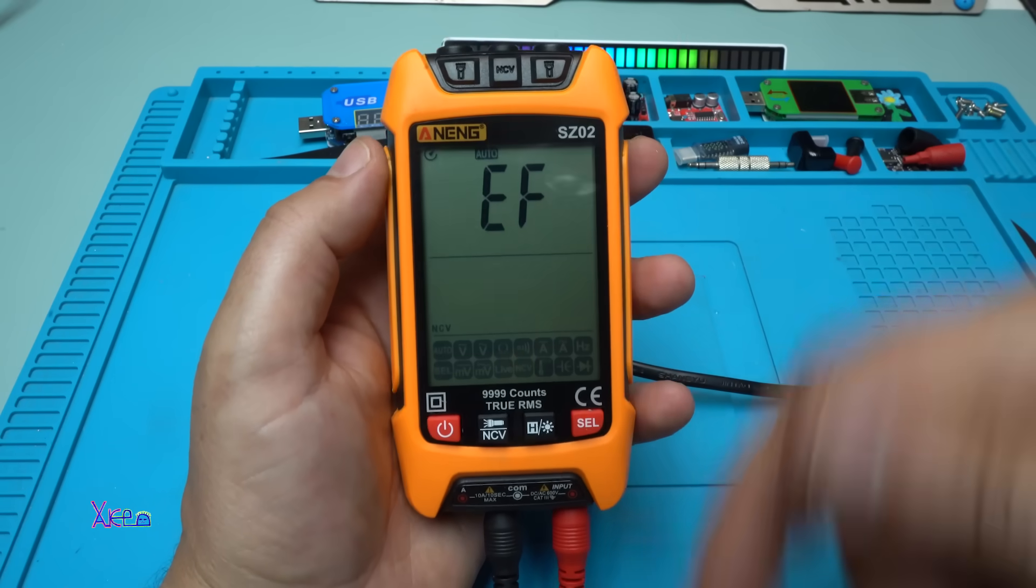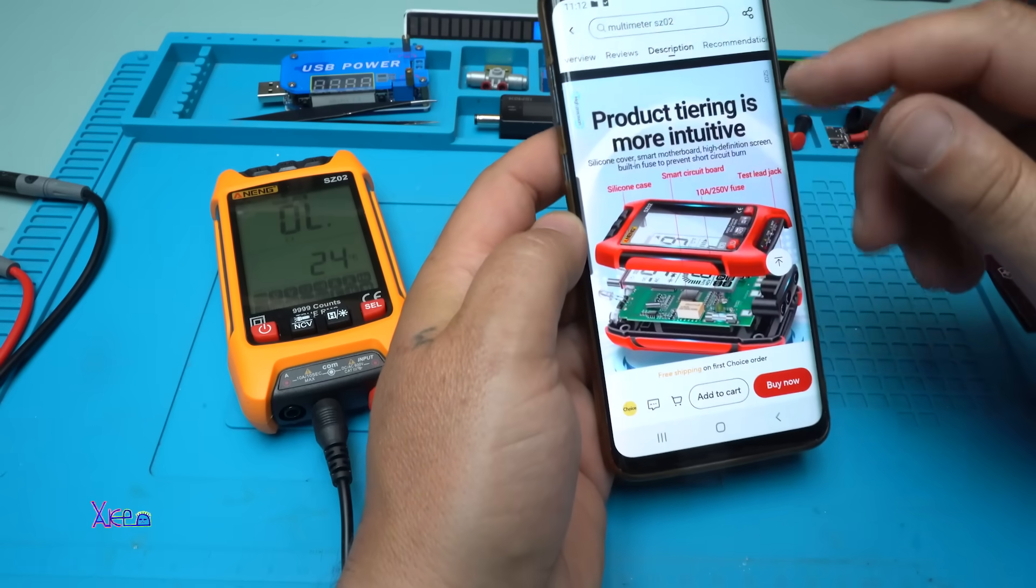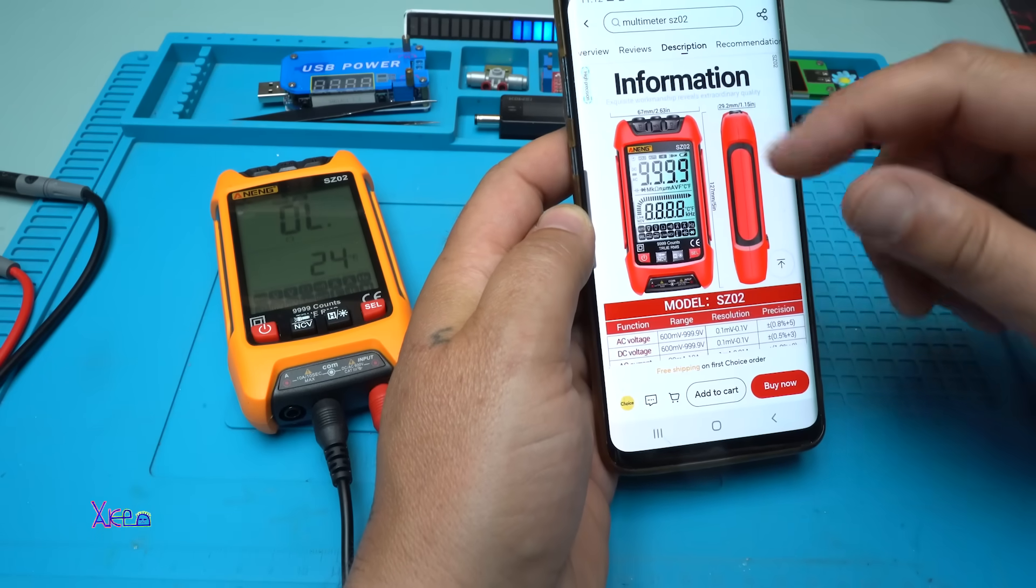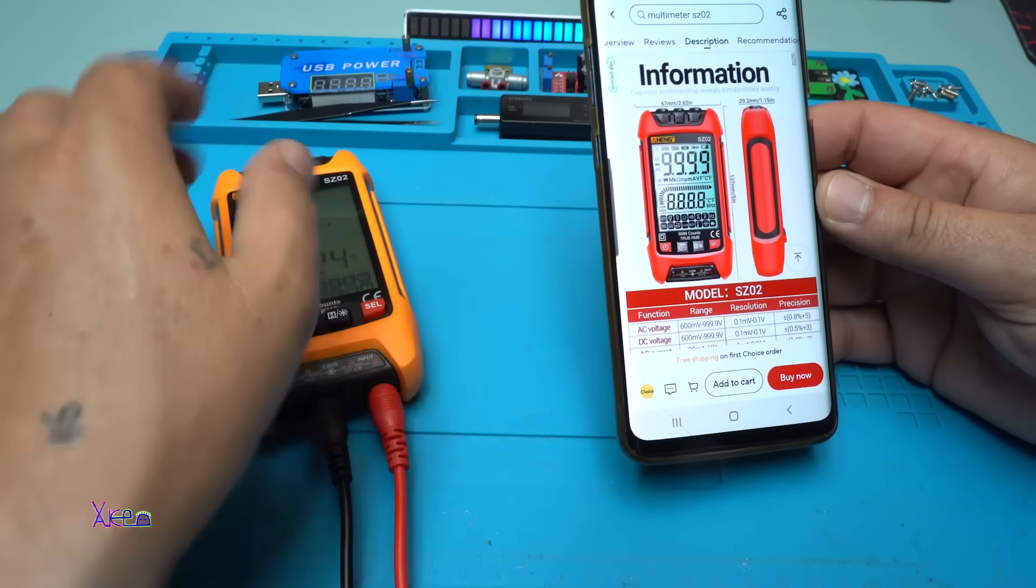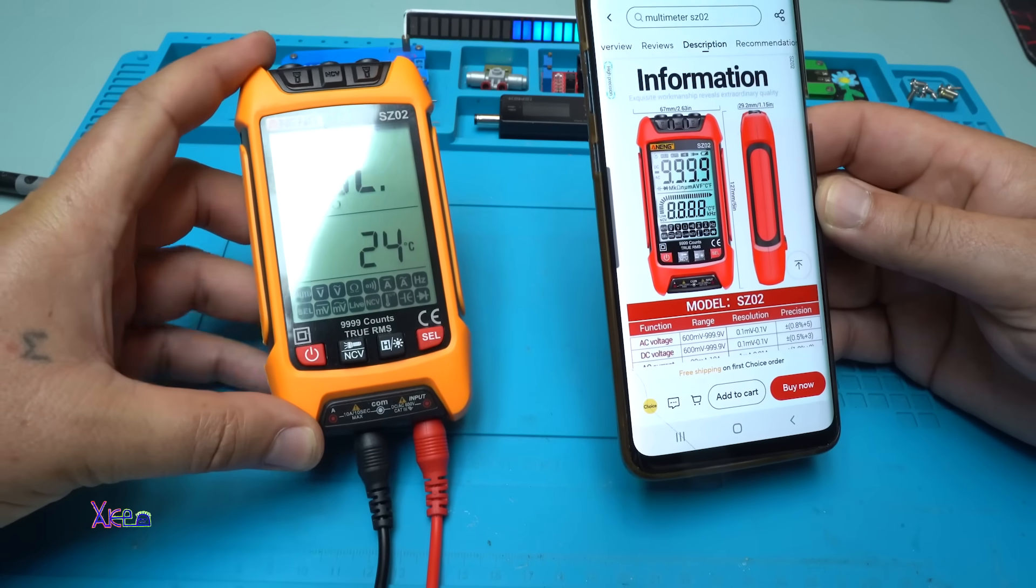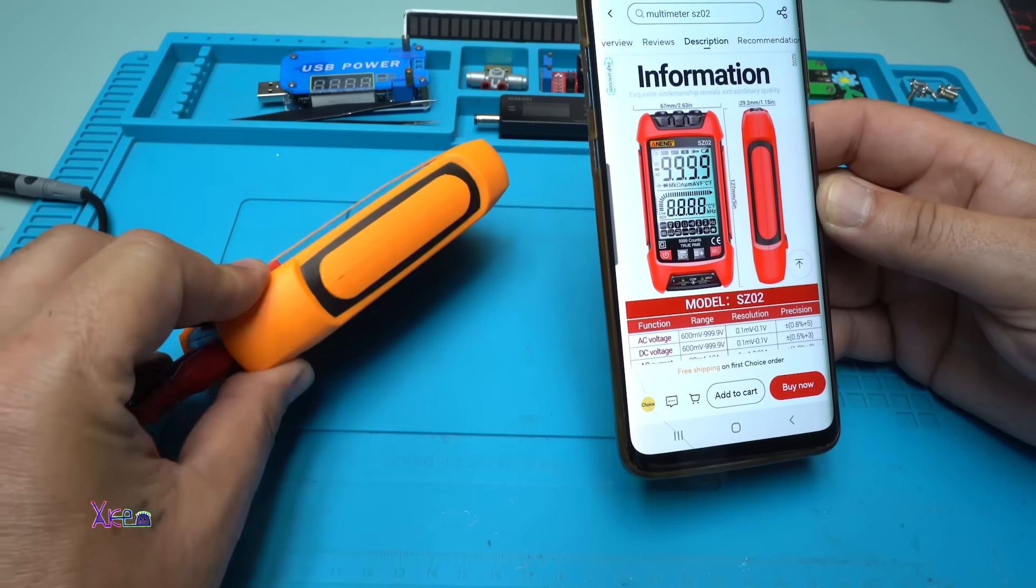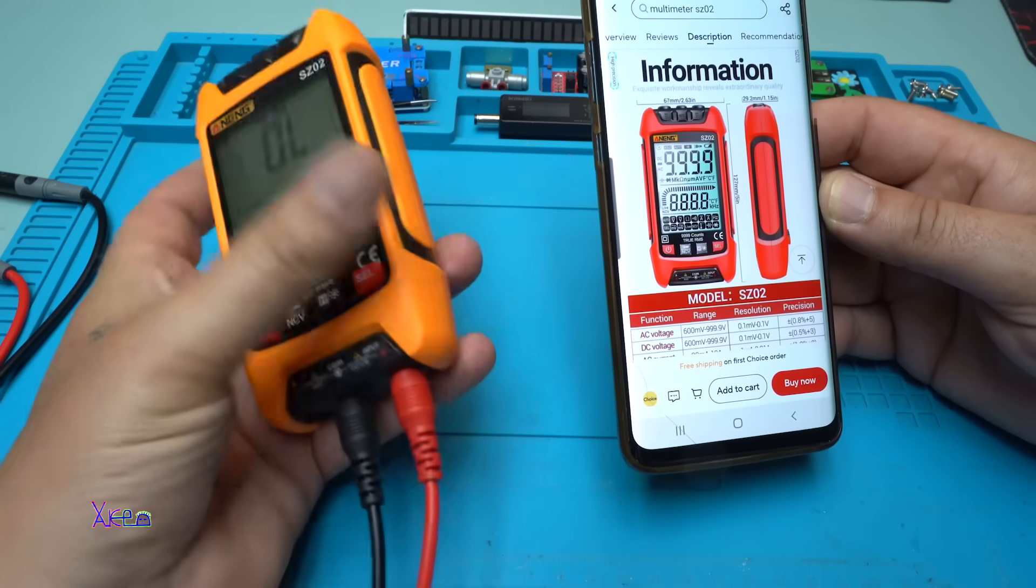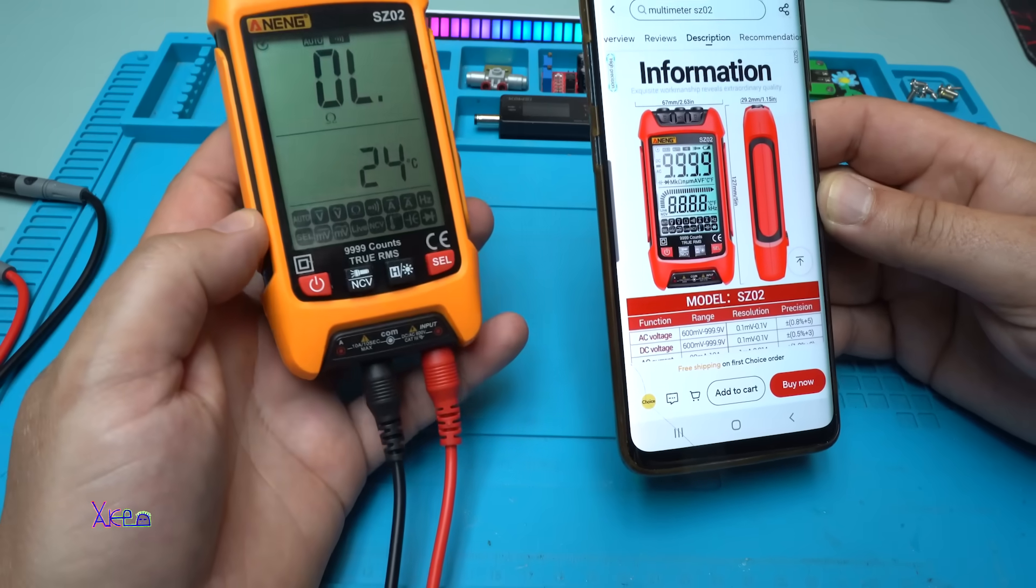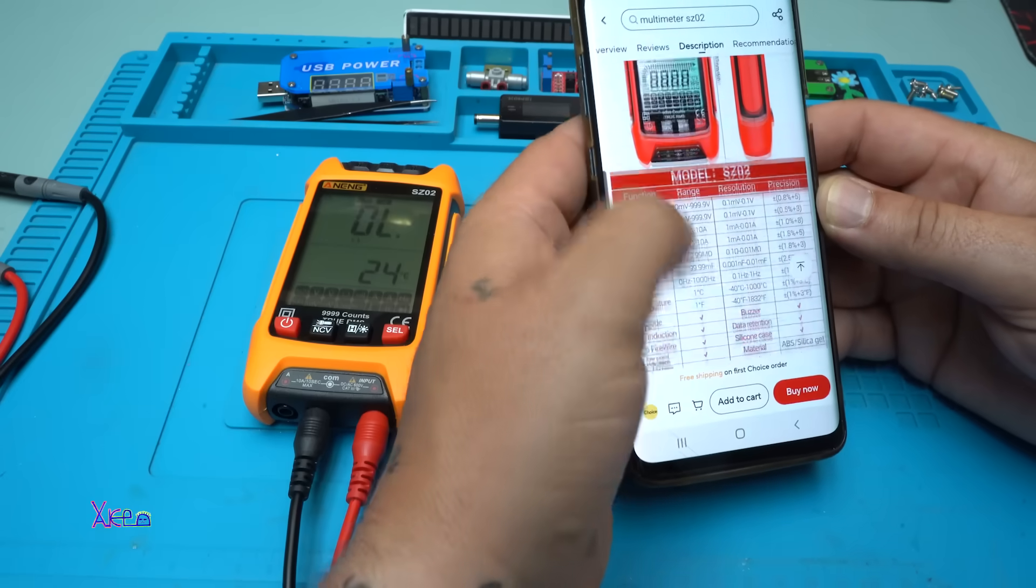The link will be in description below. So you can check it. Oh! I forgot to tell you the dimensions of the multimeter. Where is it? Here it is. It's 127 millimeters by 67 millimeters. And how thick is it. 30 millimeters.